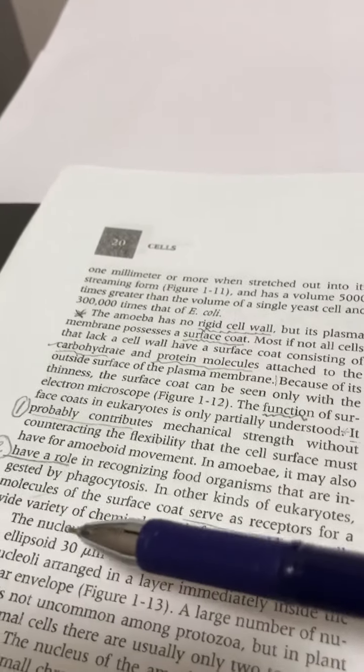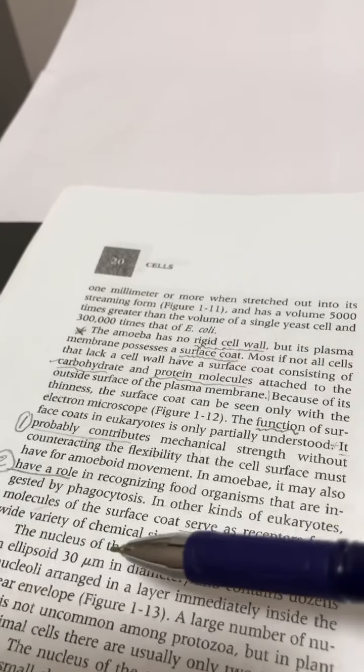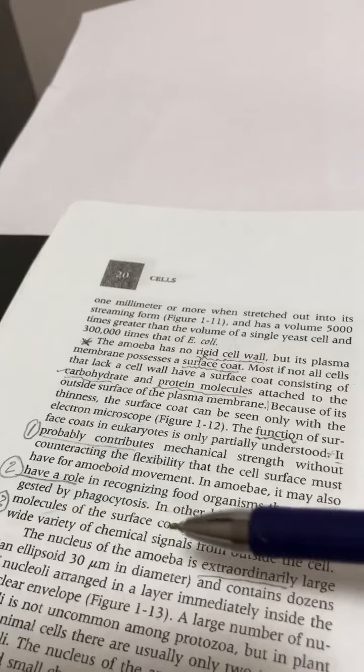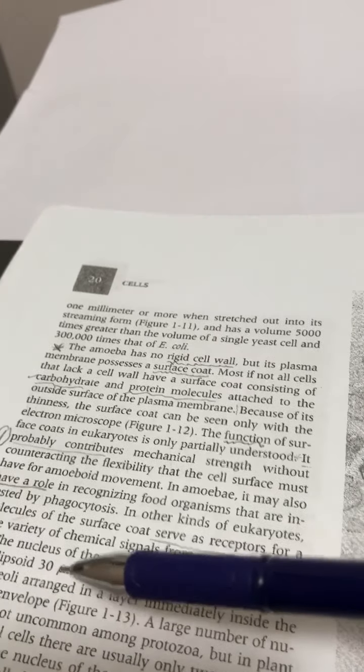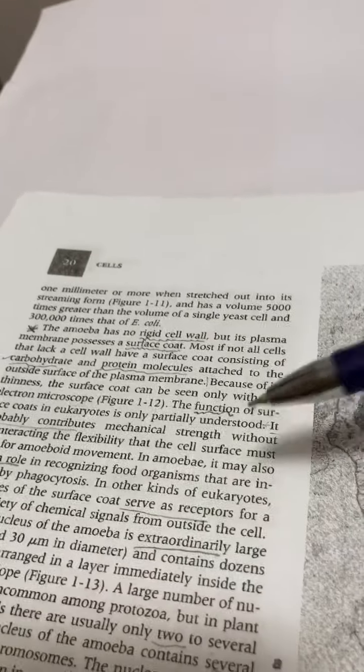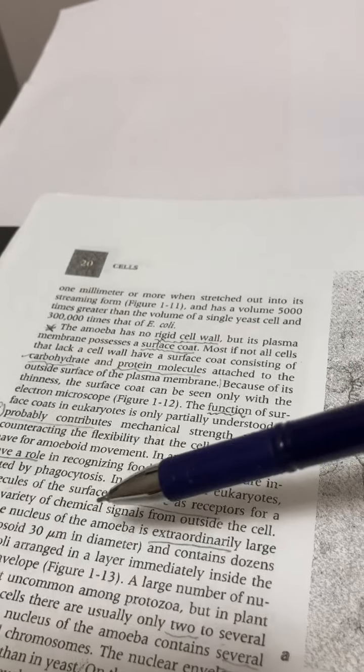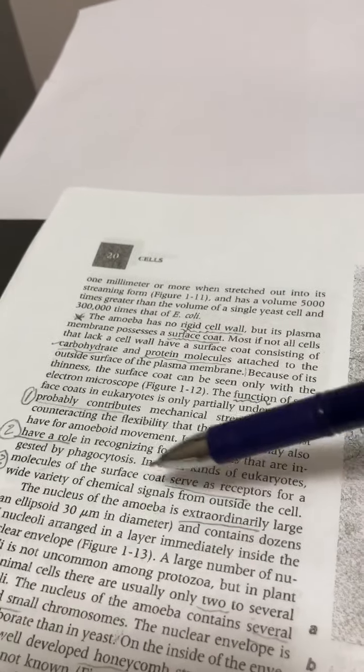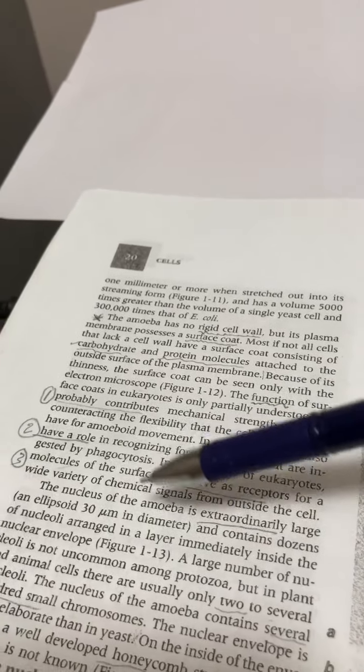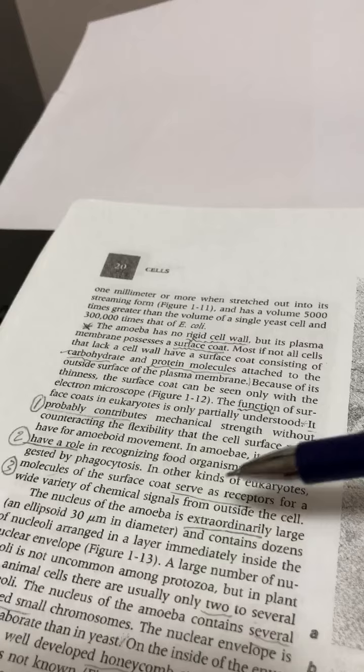Now we come to the nucleus. The nucleus in amoeba is extraordinary, very large in size, 30 micrometers in diameter, and contains a dozen nucleoli. Most cells contain one or two nucleoli.